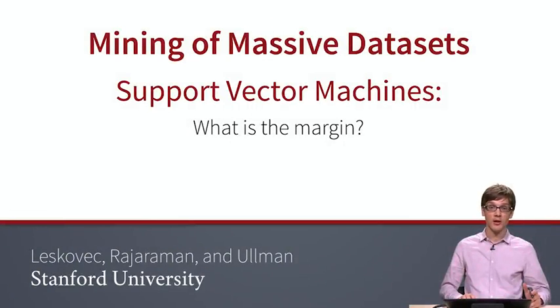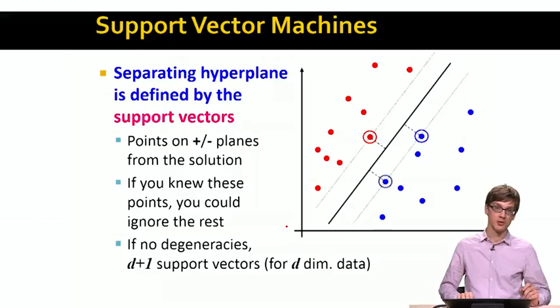So the next question is, how do we really go and find the vector w that maximizes the margin? So the question is, how do we precisely compute the margin? So now what we will learn is where the name of the support vector machines really comes from.